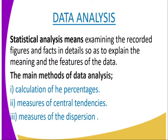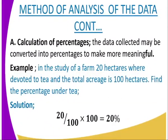The main methods of data analysis are: one, calculation of percentages; two, measure of central tendencies; and three, measure of dispersion. We start with calculation of percentages. The data collected may be converted into percentages in order to make it meaningful. For example, in the study of a farm, 20 hectares were devoted to tea and the total farm was 100 hectares. Find the percentage under tea: 20 divided by 100, times 100, which equals 20%.